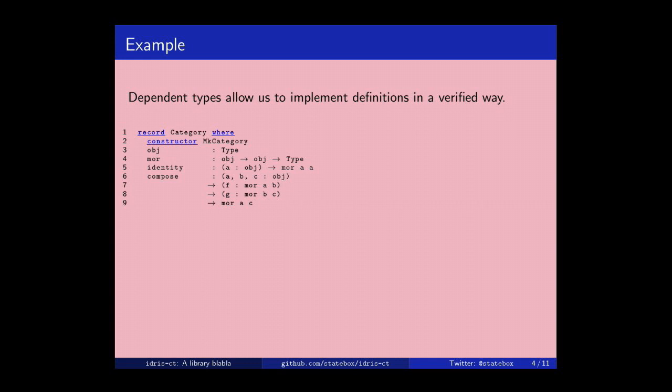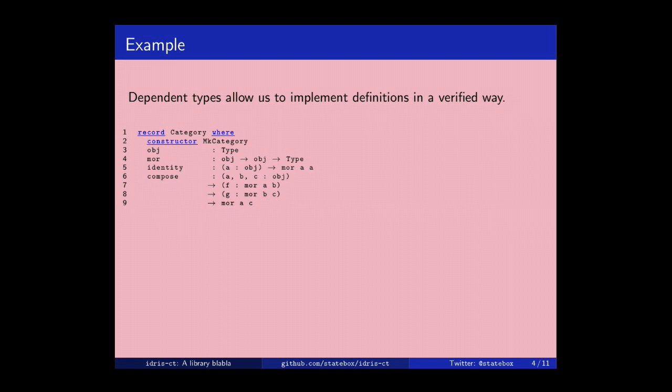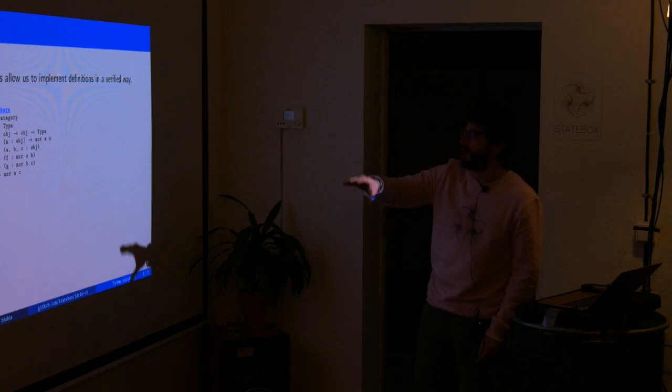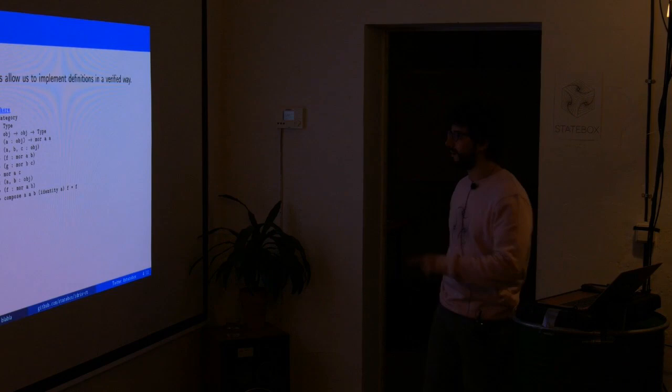So up to now, this is everything you need to specify a category, right? No. Because the point is, if I just give you this stuff, there's no way to prove that this thing forms a category. Like, there is no way to say that actually the composition is associative and the categorical laws are enforced. So we also require this.